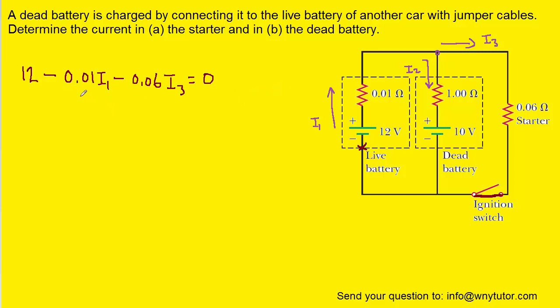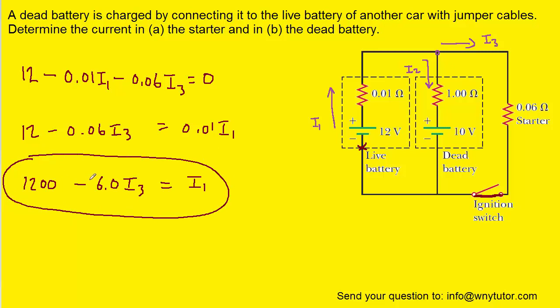We'll go ahead and solve this equation for the current I1 by adding the 0.01 I1 over to the right-hand side. And then dividing all terms by 0.01. Now this equation solved for I1, we're going to hold onto and refer back to shortly.